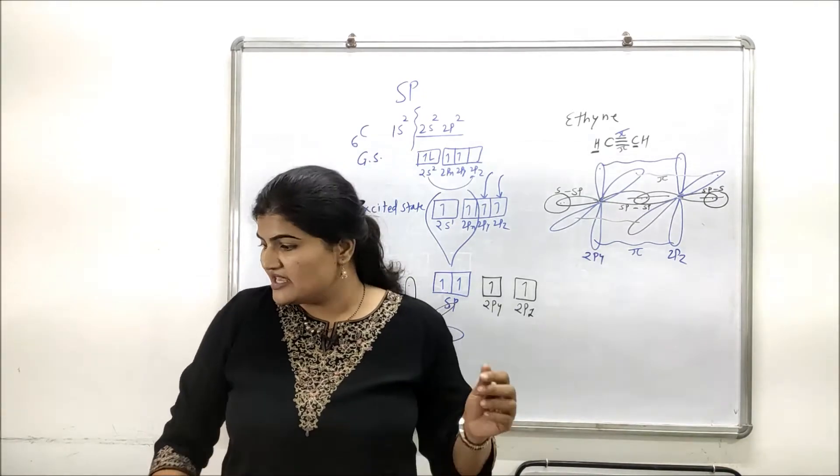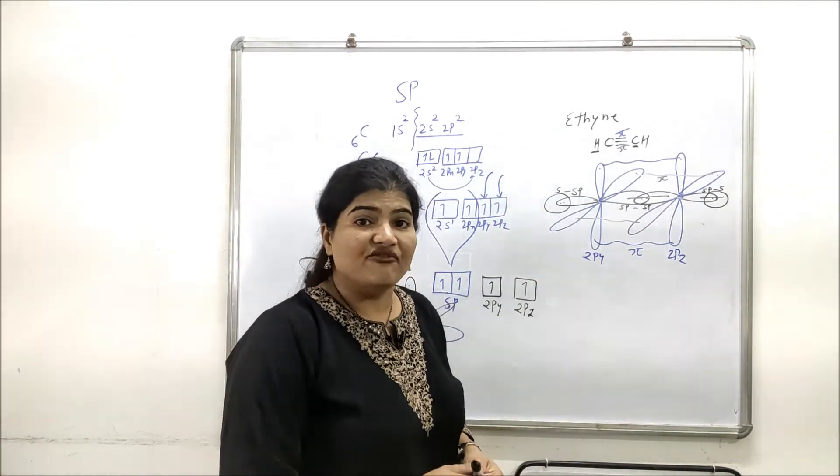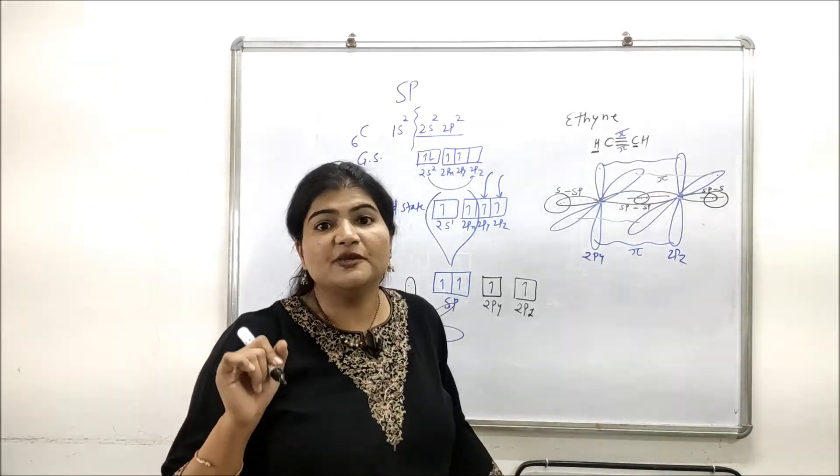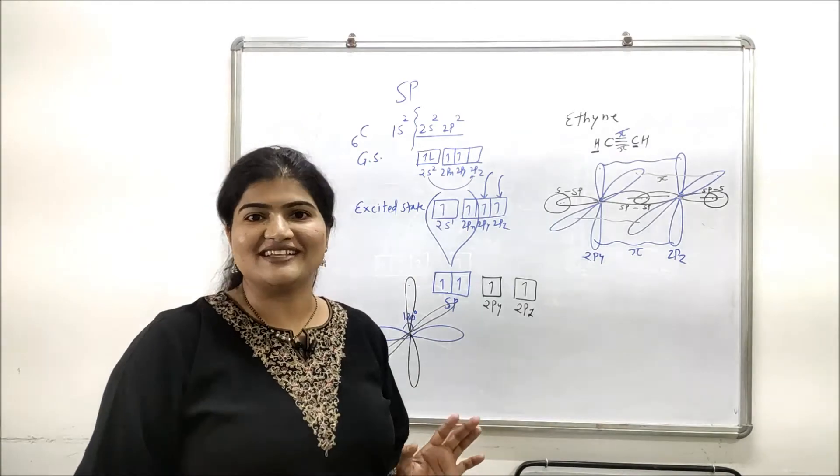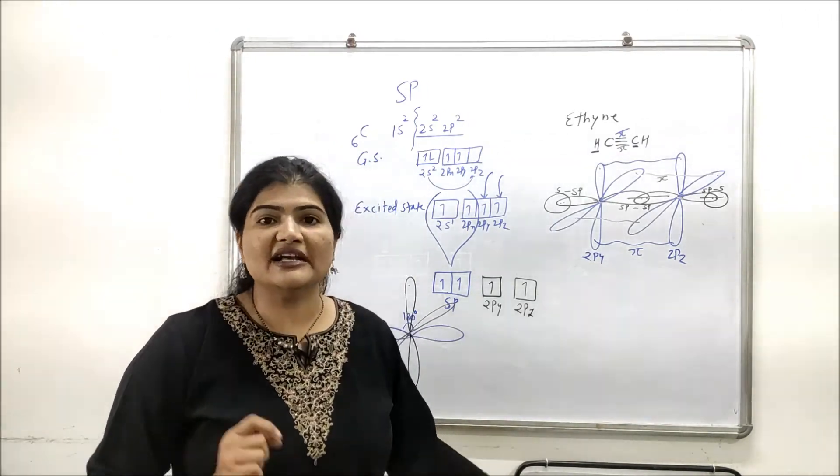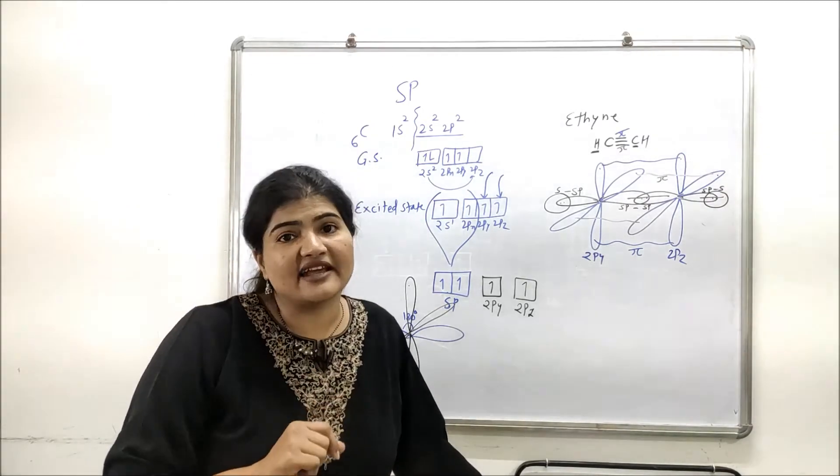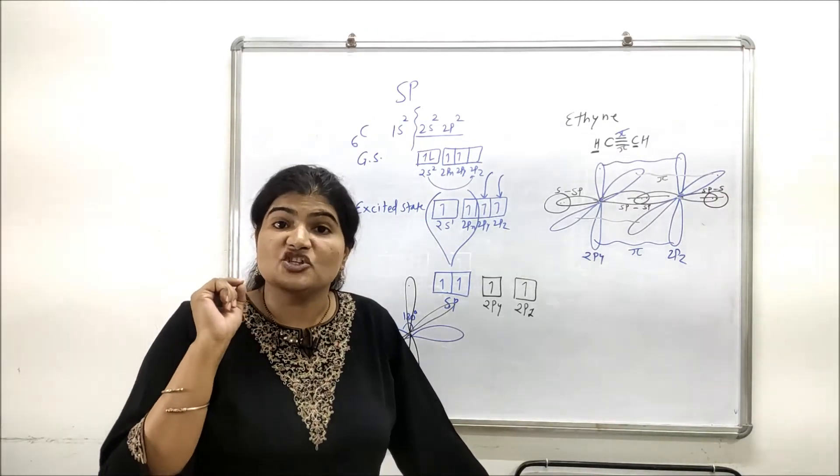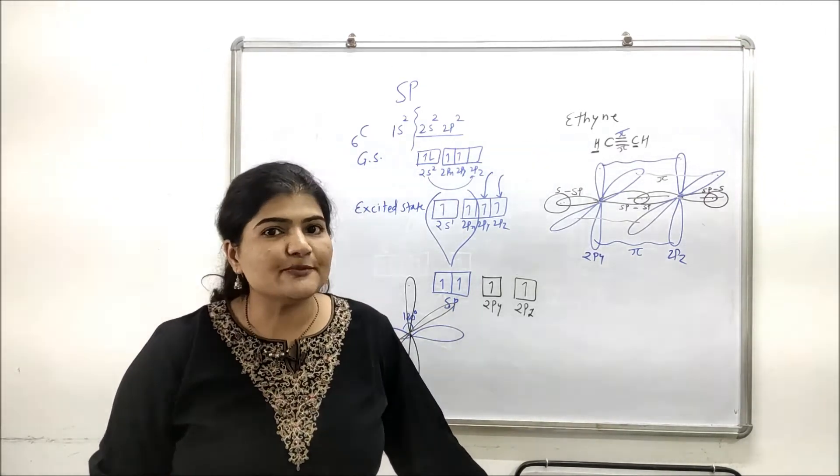You have to remember this. This is the orbital diagram of ethyne or acetylene molecule where carbon is in its sp hybridized state. This is how sp hybridization takes place. I hope you understood. Here we complete the hybridization series for carbon. I highly recommend all of you to check all three videos of sp3, sp2, and sp hybridization of carbon.